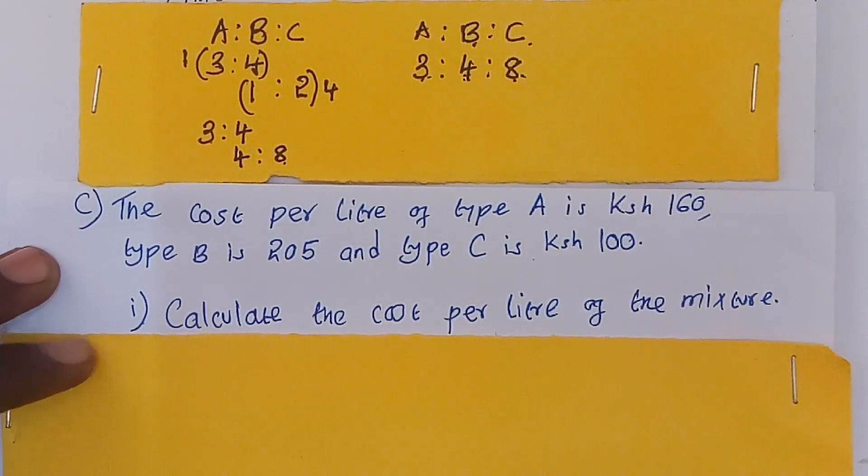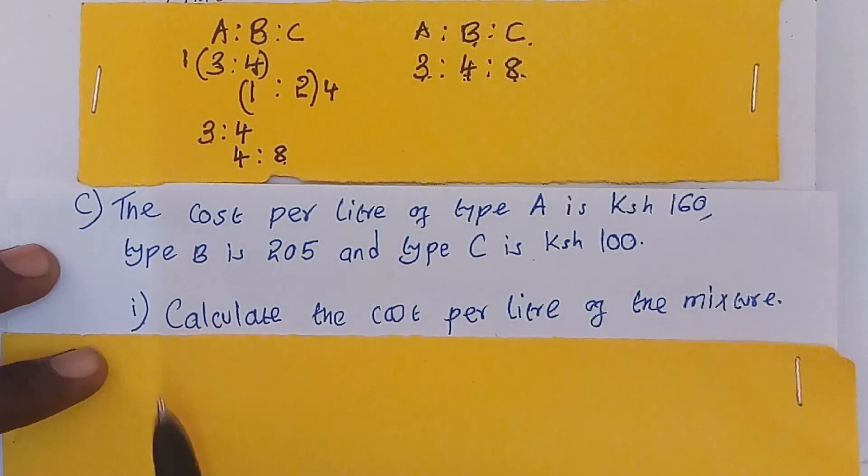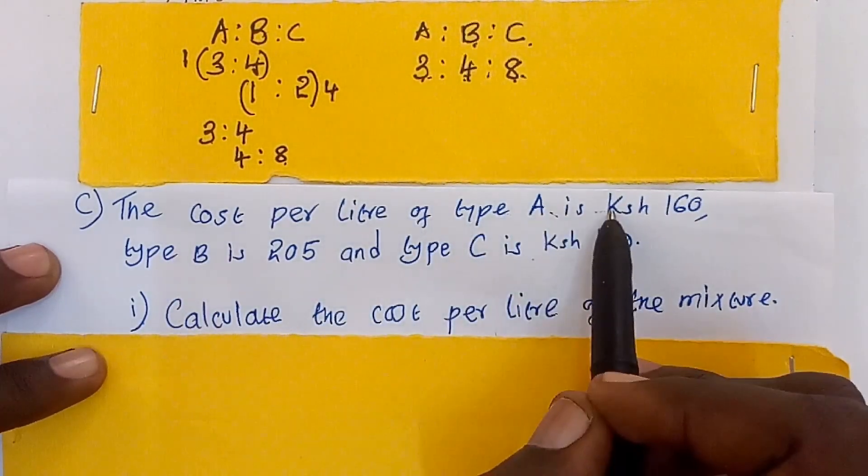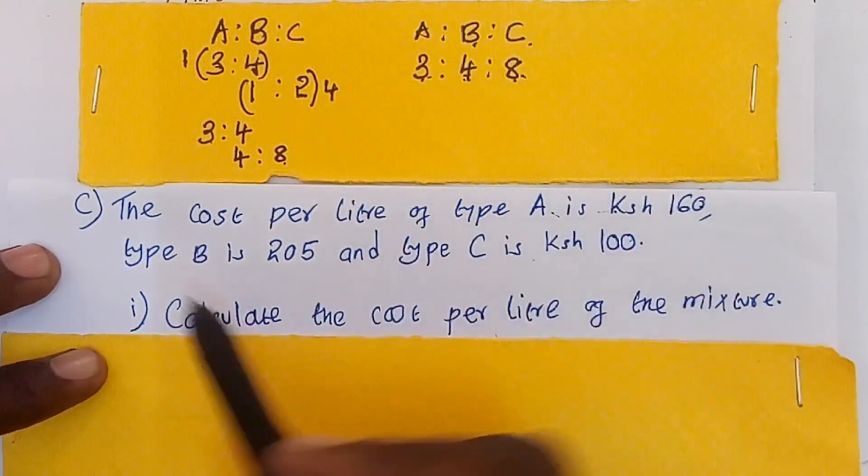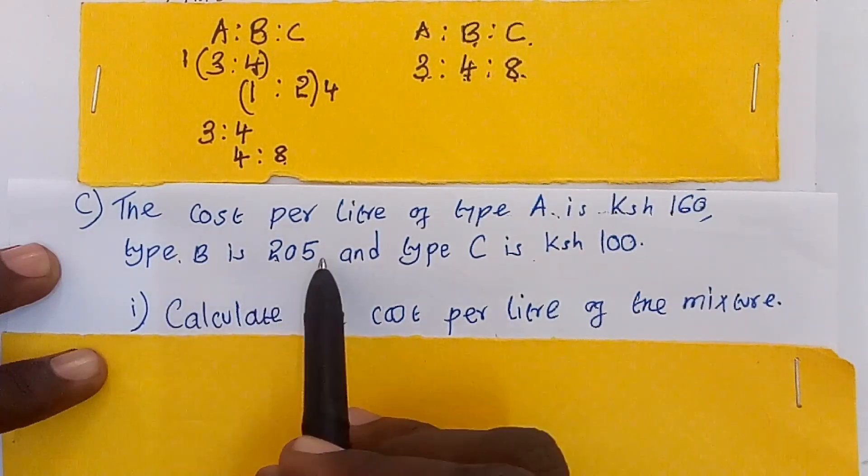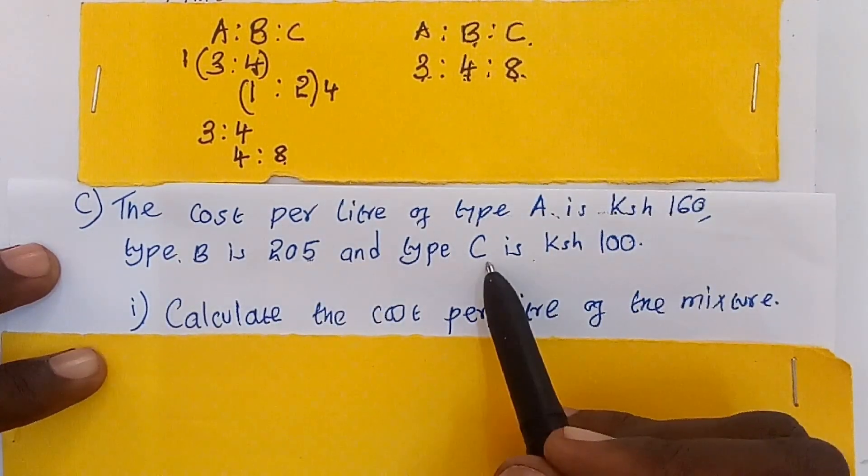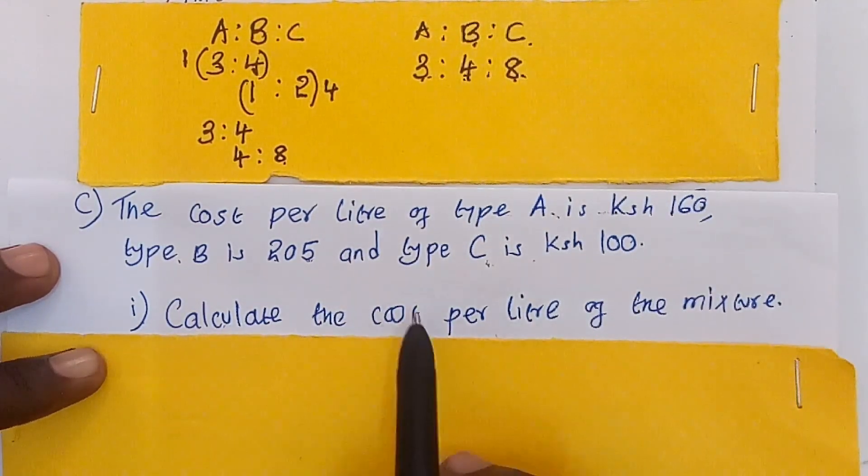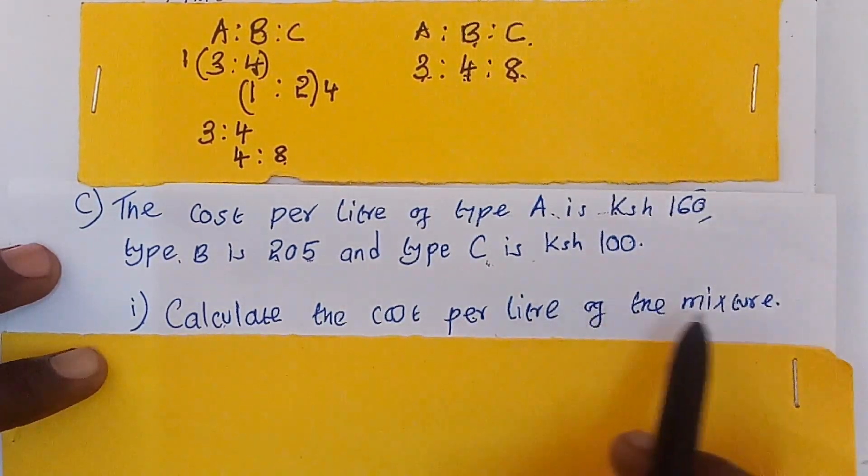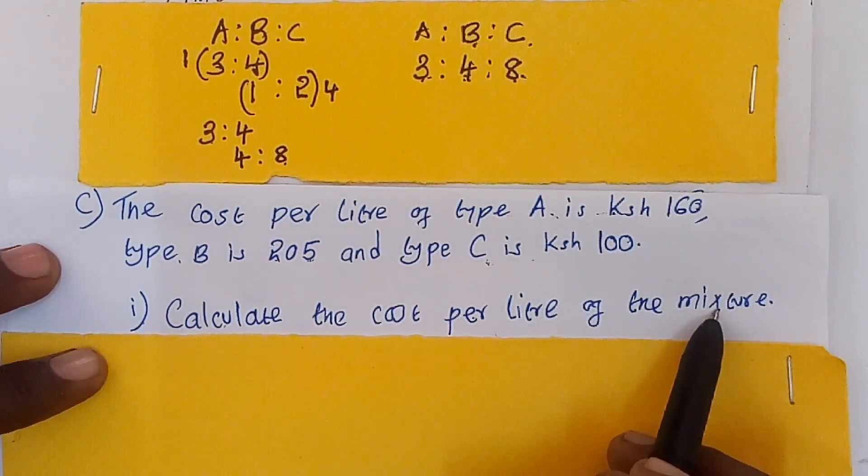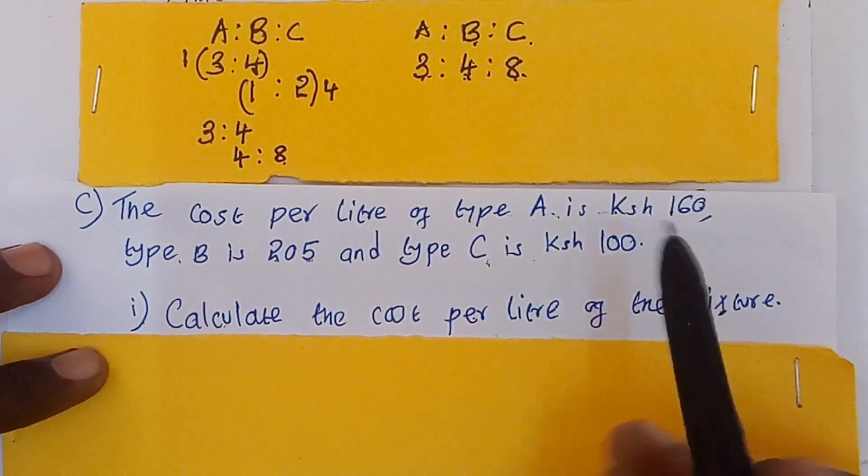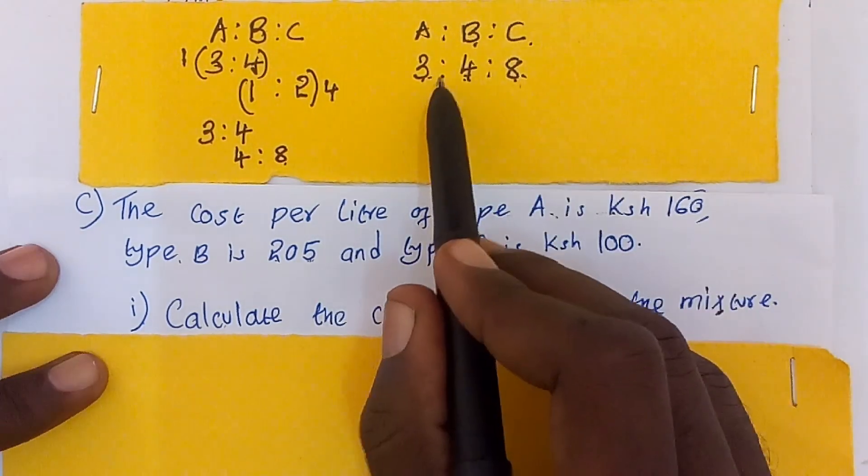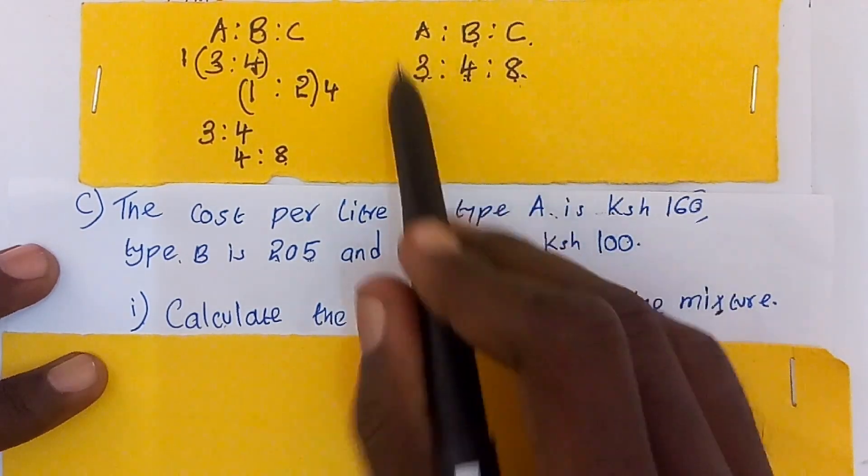Let us go now to part C, which says the cost per liter of type A is 160, type B is 205, and type C is 100. Number one, calculate the cost per liter of the mixture. Bear in mind that we get the ratio as 3 is to 4 is to 8. Therefore, multiply the ratio of each paint with the amount.